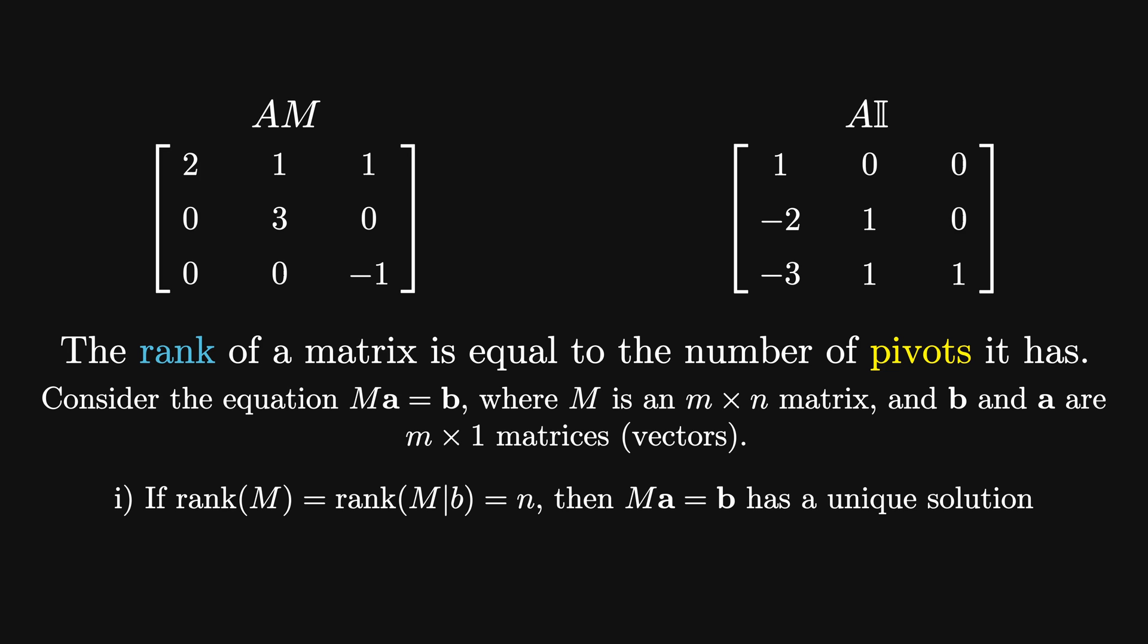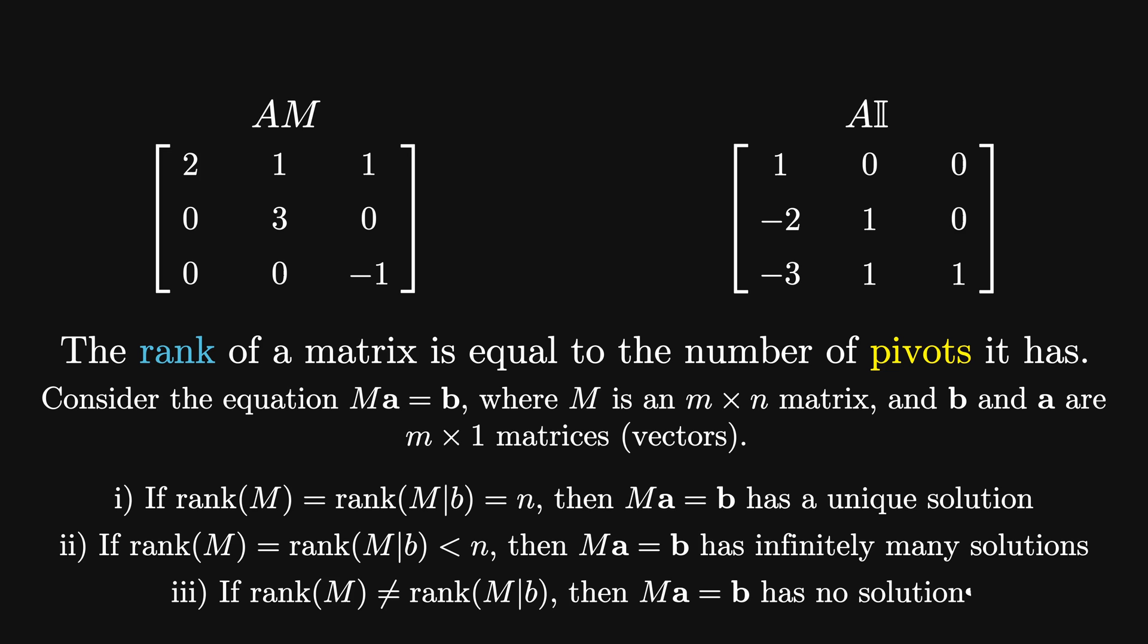We can use this to tell us about the number of solutions MA equals B has. If the rank of M is equal to the rank of the augmented matrix [M|B] and both are equal to the number of columns in M, then the system MA equals B has one unique solution. If the rank of M is equal to the rank of the augmented matrix [M|B], which is less than the total number of columns, then the system MA equals B has infinitely many solutions. If the rank of M does not equal the rank of [M|B], then there are no solutions to the system. If M is square and all pivots are non-zero, then we can continue with our algorithm to invert M, the second part of which we call back substitution.